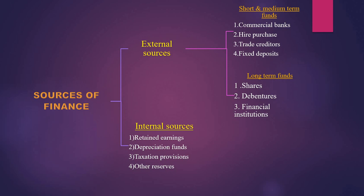This chart shows the sources of finance. There are two types: external sources and internal sources. Under internal sources: retained earnings, depreciation fund, taxation provisions, and other reserves. Under external sources, there are two bifurcations — short and medium term funds, and long term funds. Short and medium term funds include commercial banks, hire purchase, trade creditors, and fixed deposits. Long term funds include shares, debentures, and financial institutions.